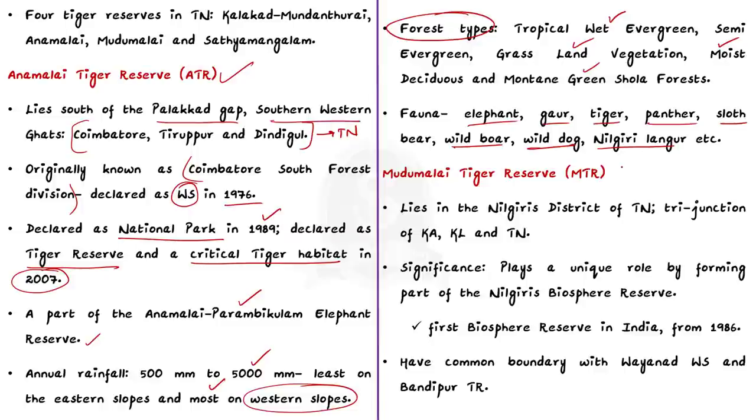Now let us discuss about Mudumalai Tiger Reserve. The name Mudumalai means Ancient Hill Range. Mudumalai Tiger Reserve is located in the Nilgiris district of Tamil Nadu. It is located at the tri-junction of Karnataka, Kerala and Tamil Nadu. Mudumalai Tiger Reserve plays a unique role by forming a part of Nilgiris Biosphere Reserve. Nilgiris Biosphere Reserve is the first biosphere reserve in India, which was declared in 1986.